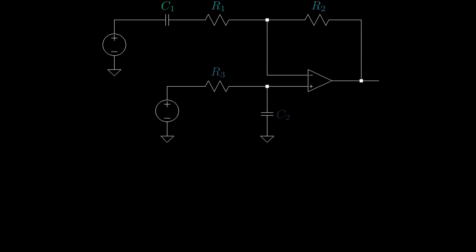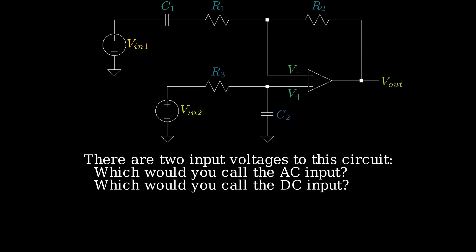Starting out by drawing the circuit, we have a multi-input, single-output system with three resistors, two capacitors, and a non-ideal op-amp. The first question I asked was, which input would you call the AC input, and which would you call the DC input? Feel free to pretend that you are answering the question here.